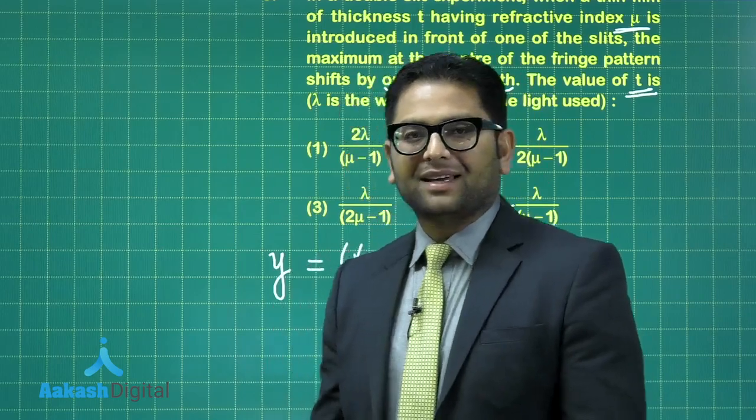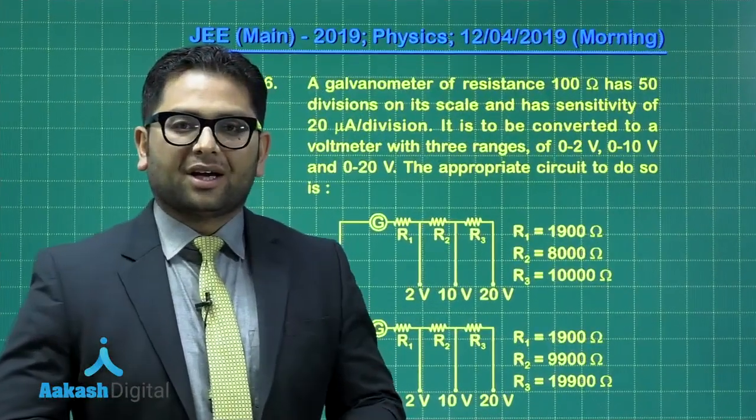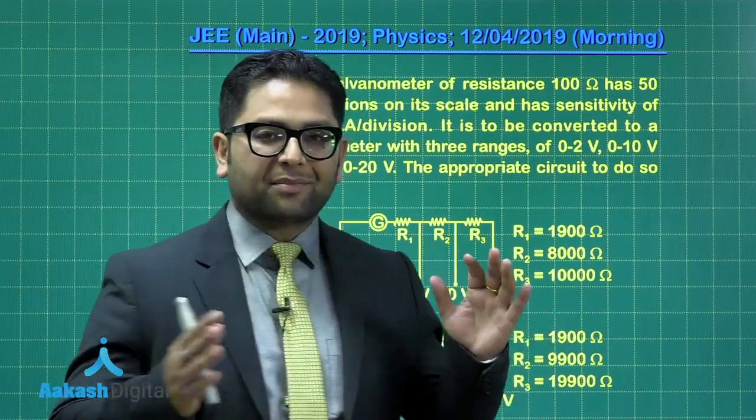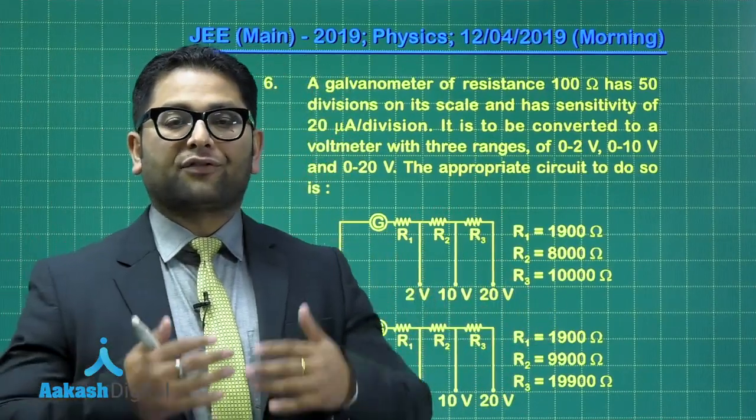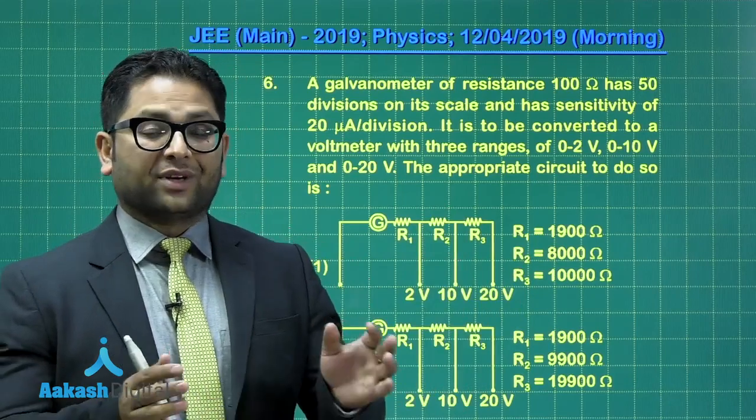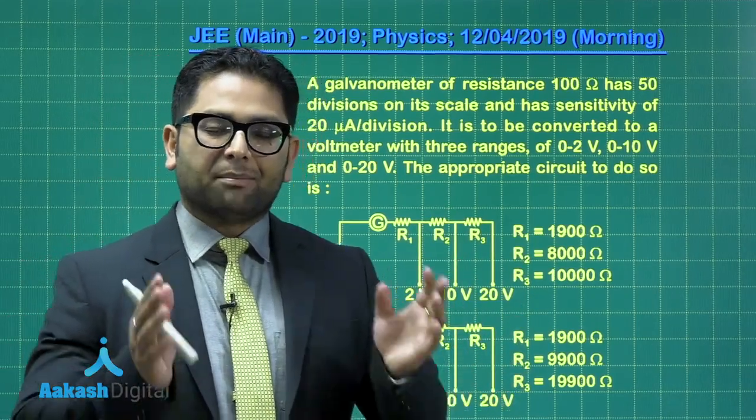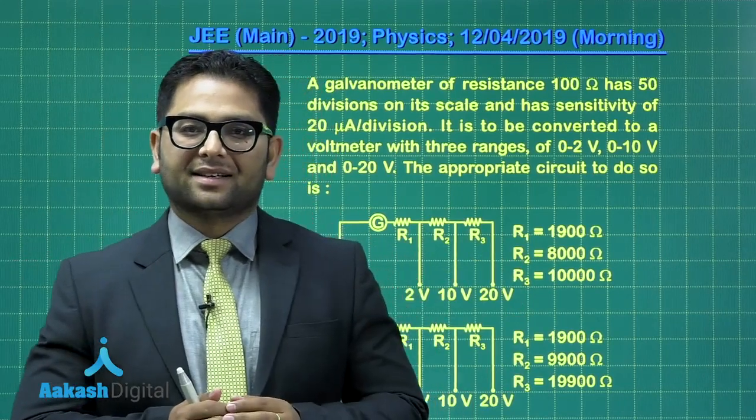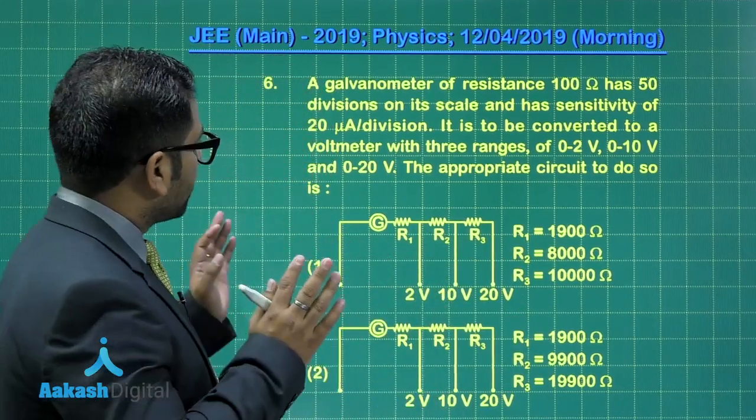Time to move to the next one. Question number 6, related to measuring instrument, and it has something to do with conversion of galvanometer into voltmeter. And we know the concept. That is done by adding high value resistance in series. Now let's see what is it about.